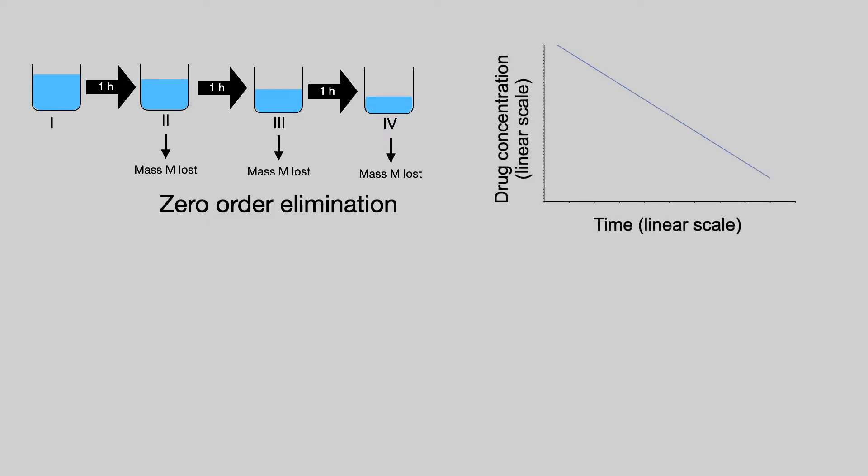This is our zero order elimination model. Let's translate that to drug in plasma. Here is a plot on a linear scale of drug concentration over time representing zero order elimination. And you can see the plot is a straight line showing linear decline.